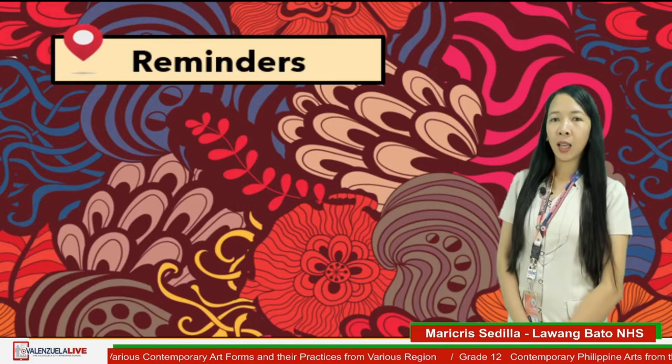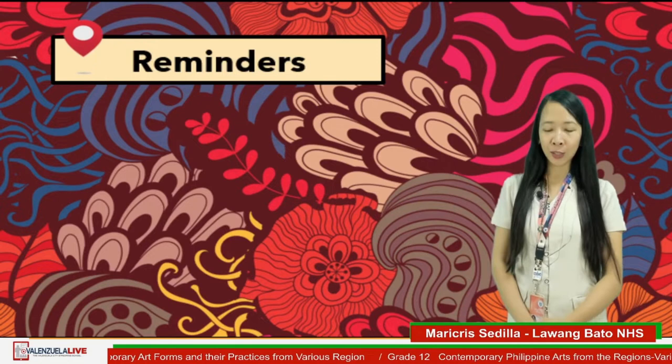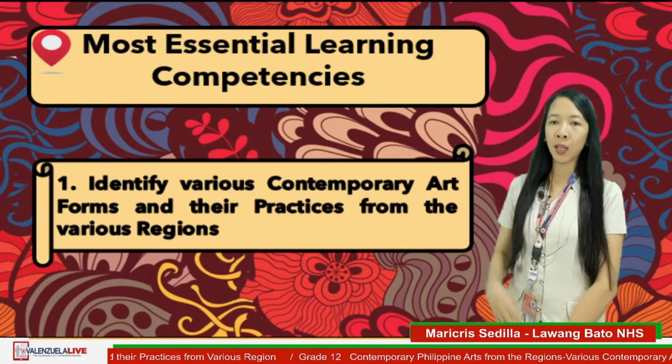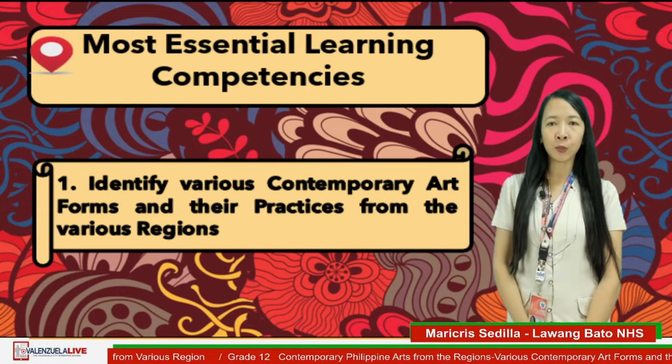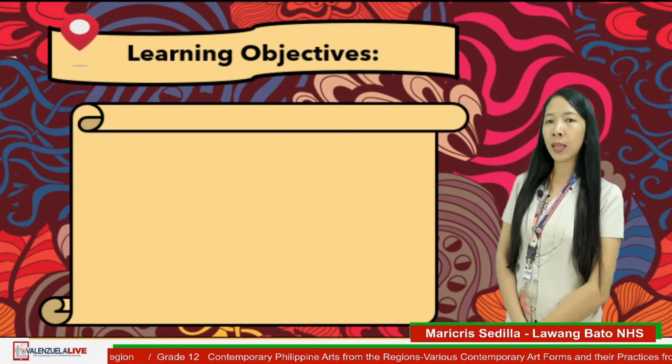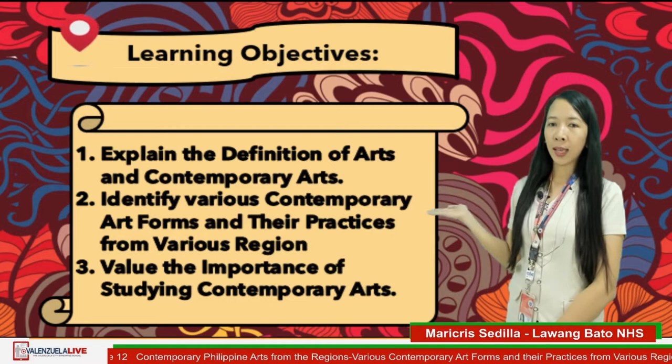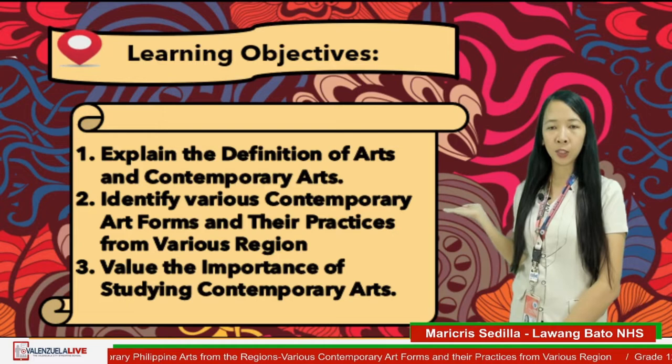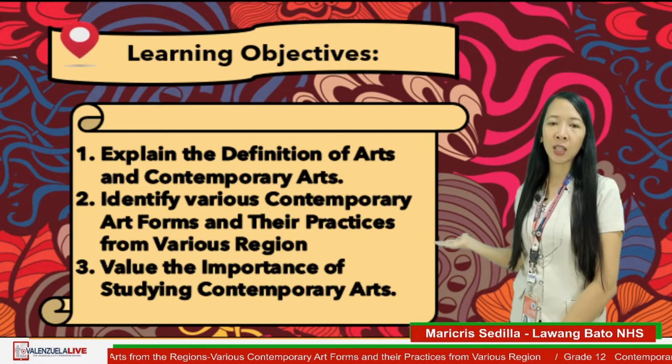Lastly, participate, have fun, and stay focused during the discussion. For today's most essential learning competency is to identify the various contemporary art forms and their practices from the various regions. Our learning objectives are: number one, explain the definition of arts and contemporary arts; second, identify various contemporary art forms and their practices from various regions; and lastly, value the importance of studying contemporary arts.